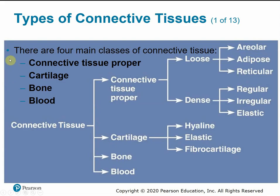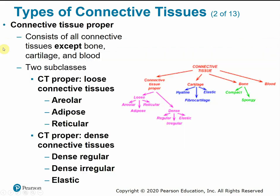To review the four main classes of connective tissue: connective tissue proper — typically what you'd think of, including tendons, ligaments, and cartilage. Connective tissue proper consists of all connective tissues except bone, cartilage, and blood. It is divided further based on fiber arrangement — loosely arranged or densely packed. Loose connective tissues include areolar, adipose, and reticular. Dense connective tissue includes dense regular, dense irregular, and elastic.